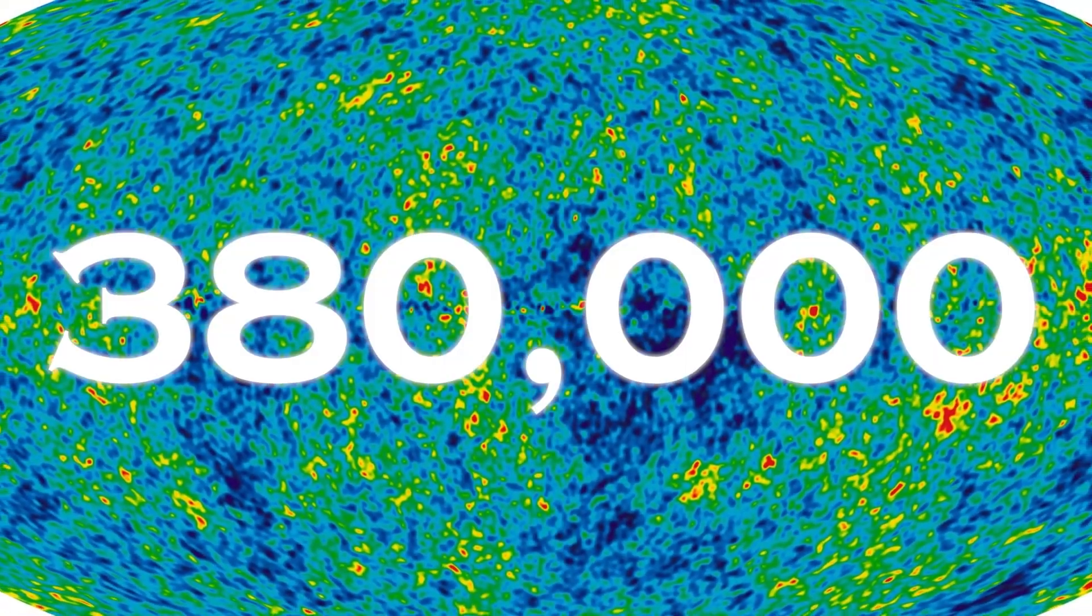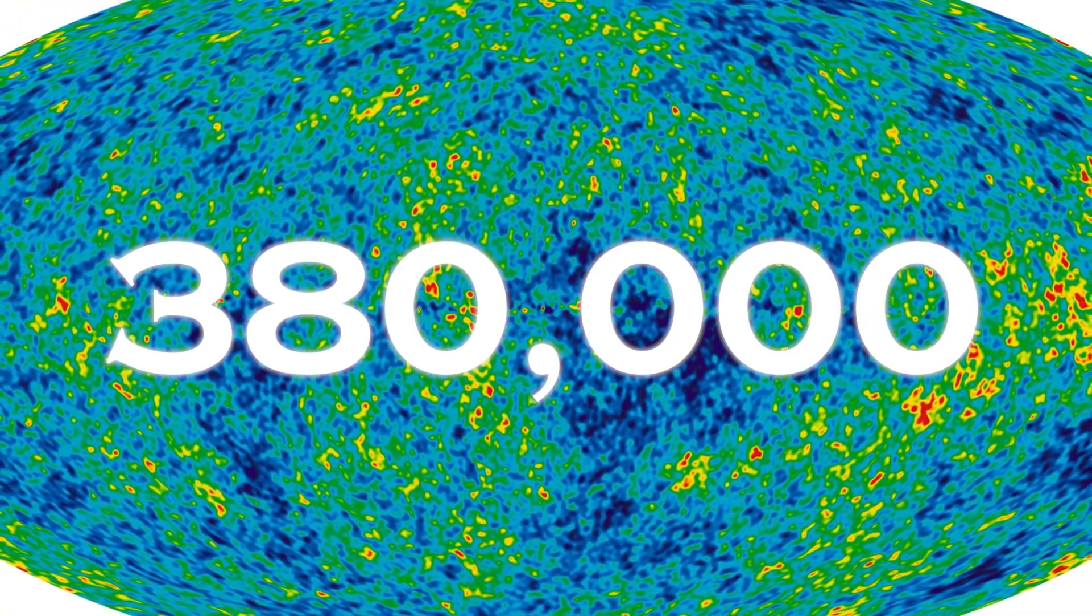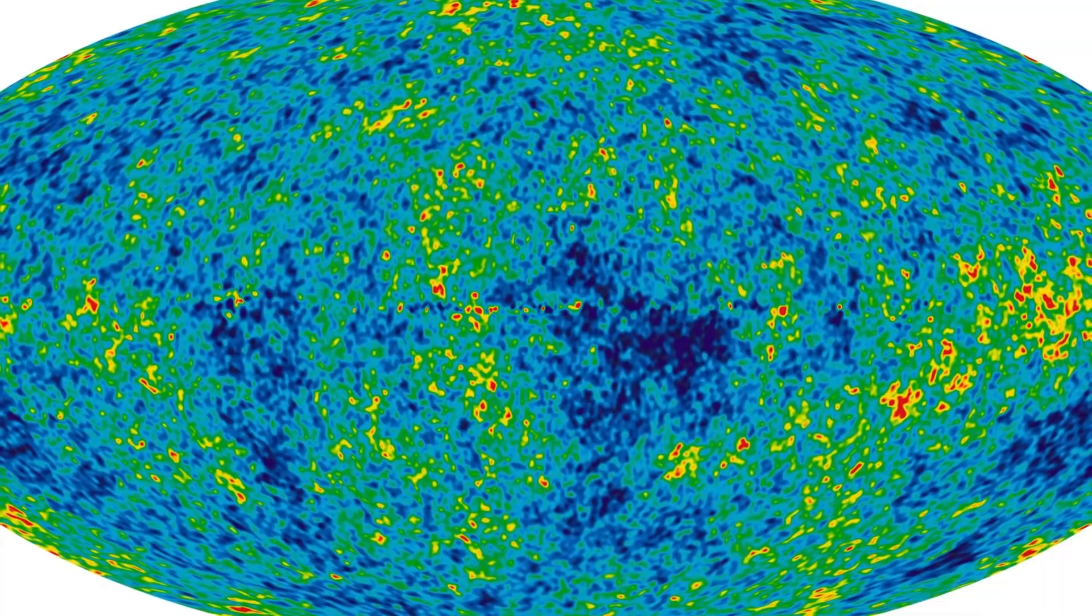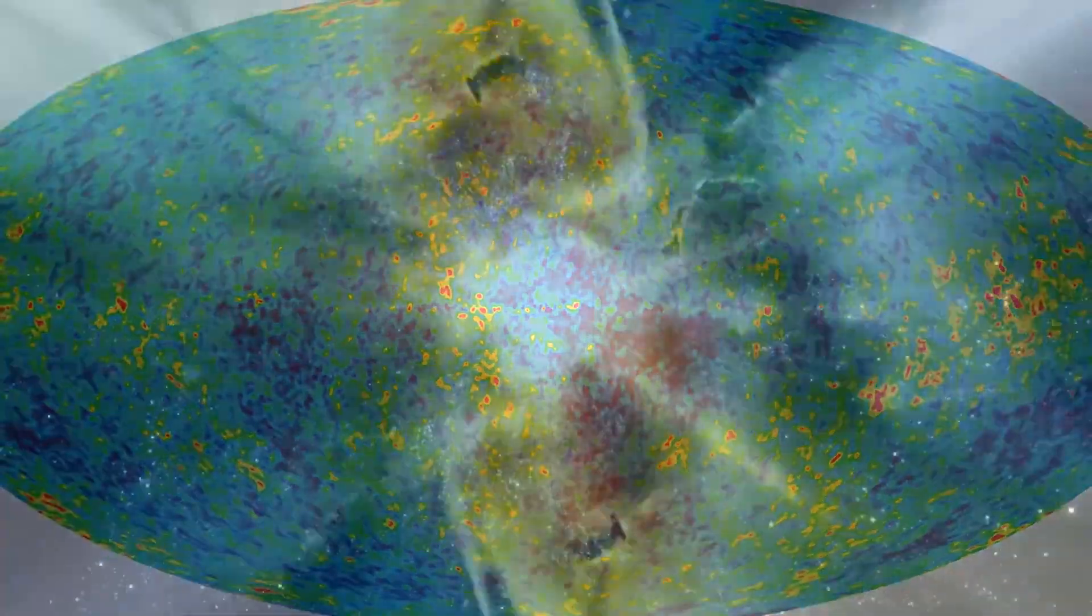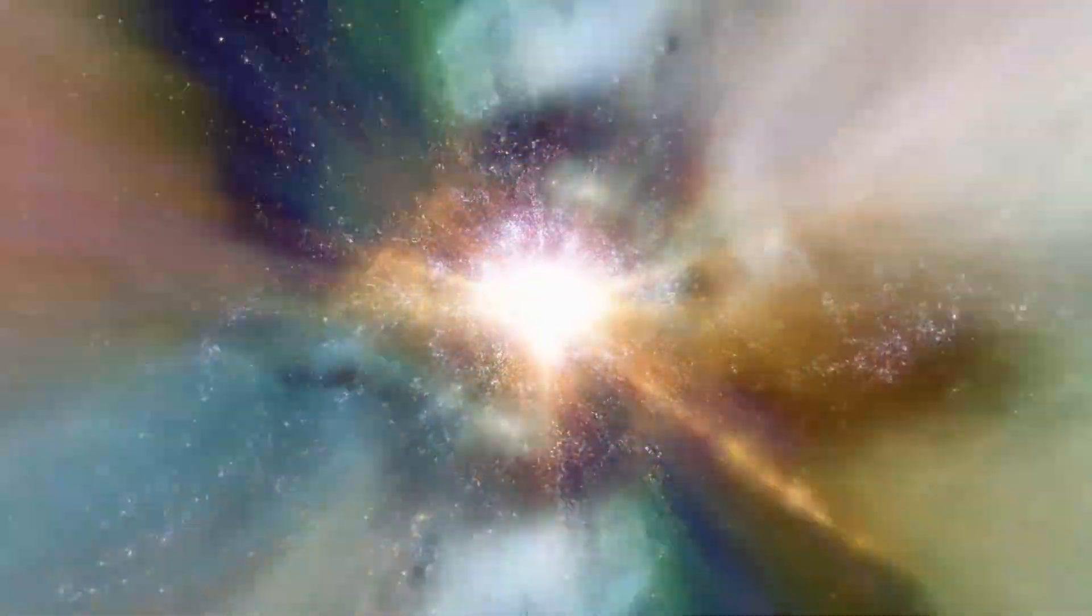This microwave energy comes from when the universe was only 380,000 years old. Astronomers can determine the age of the universe and its expansion rate by measuring the tiny ripples of temperature and polarization emitted by the CMB.